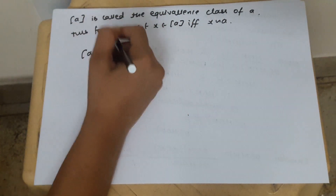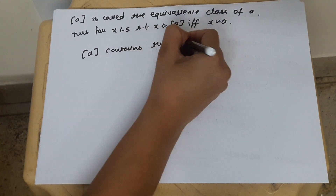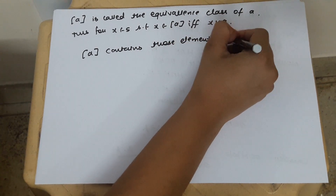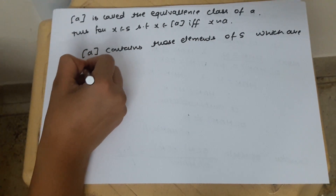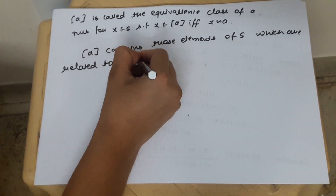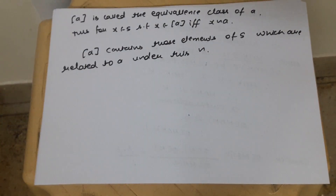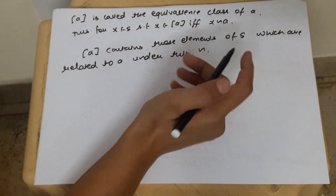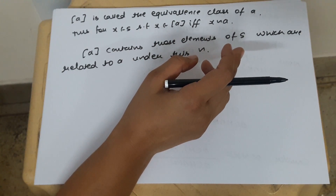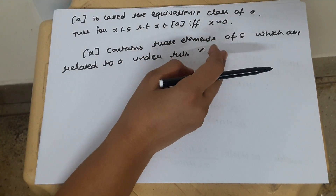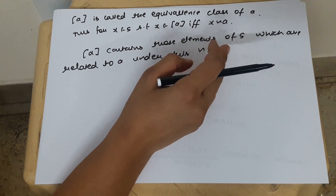The equivalence class [A] contains those elements of S which are related to A under the relation tilde. That was the basic definition of equivalence relation as well as equivalence class. In the next video, we will define some properties of equivalence relation and equivalence classes. The same video is also available in Hindi, where I write in English but explain everything in Hindi.